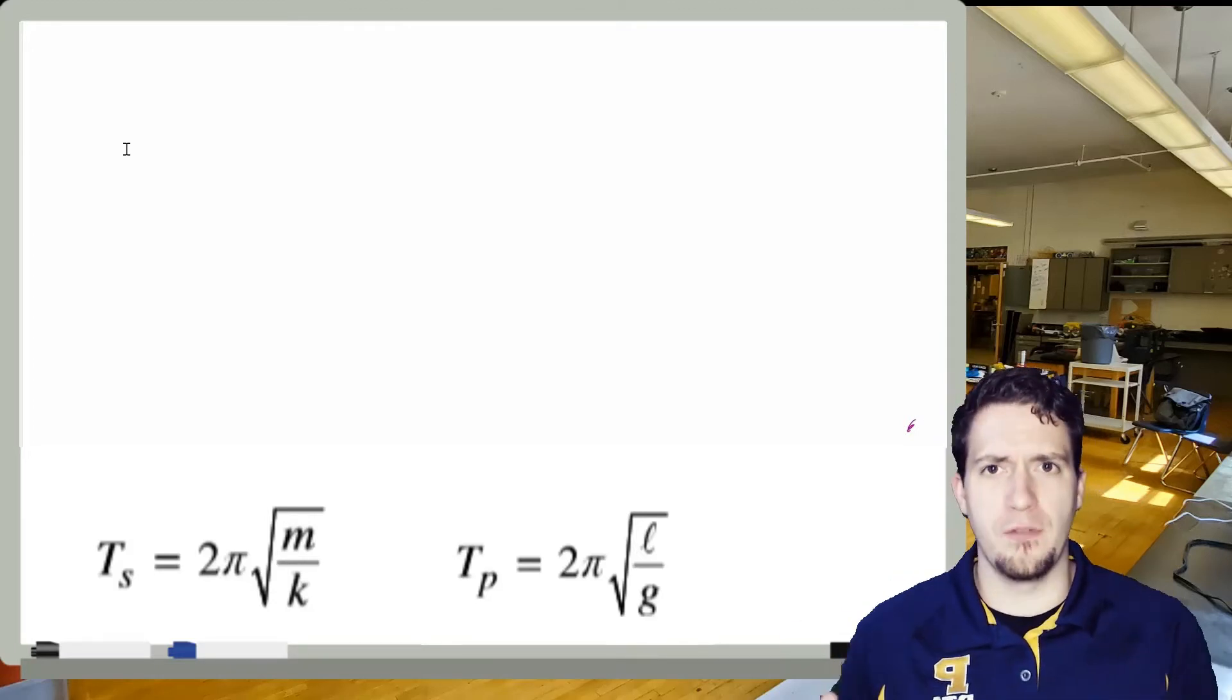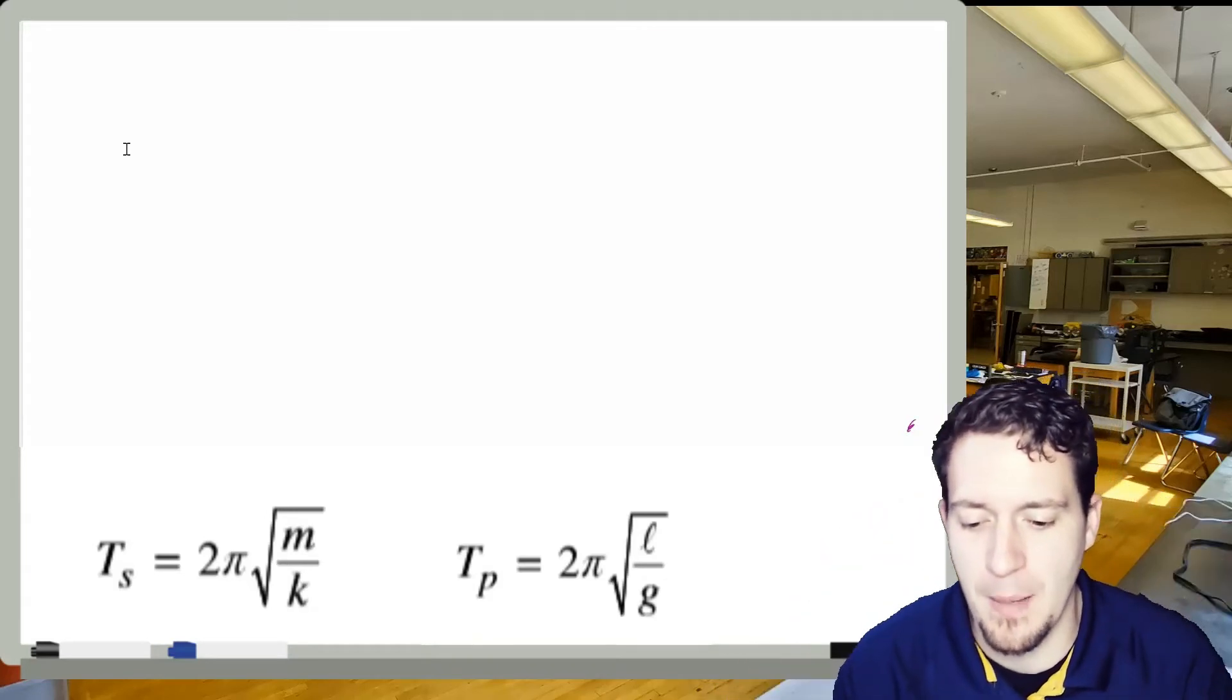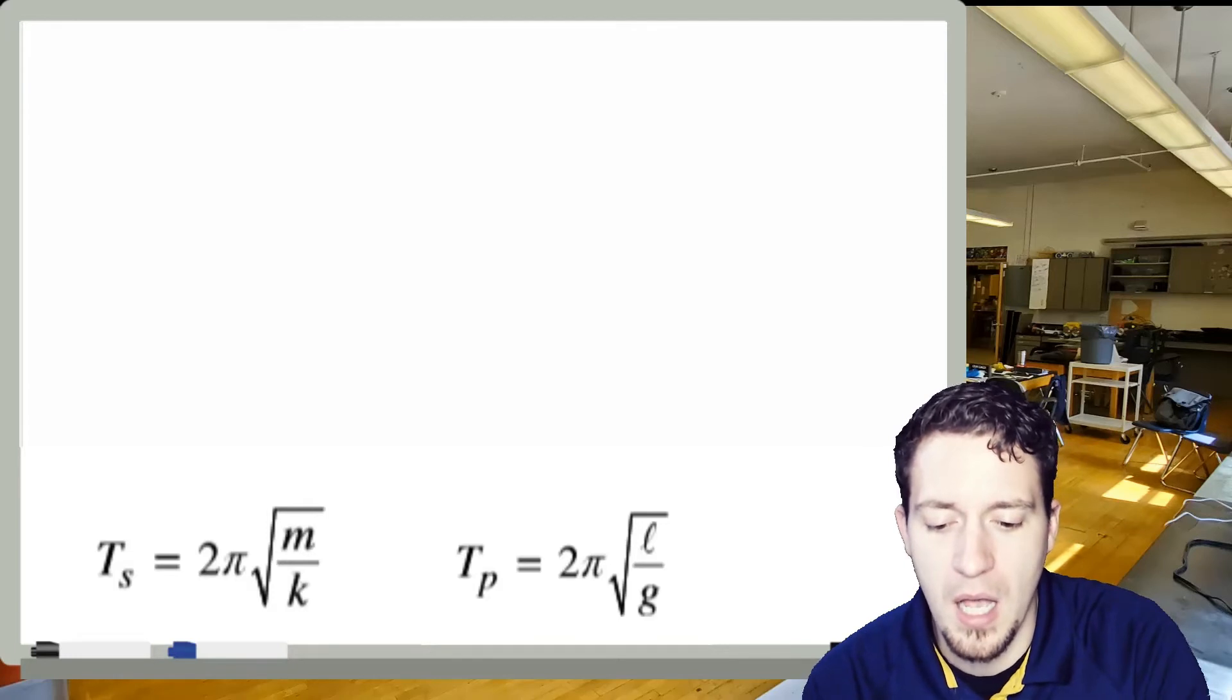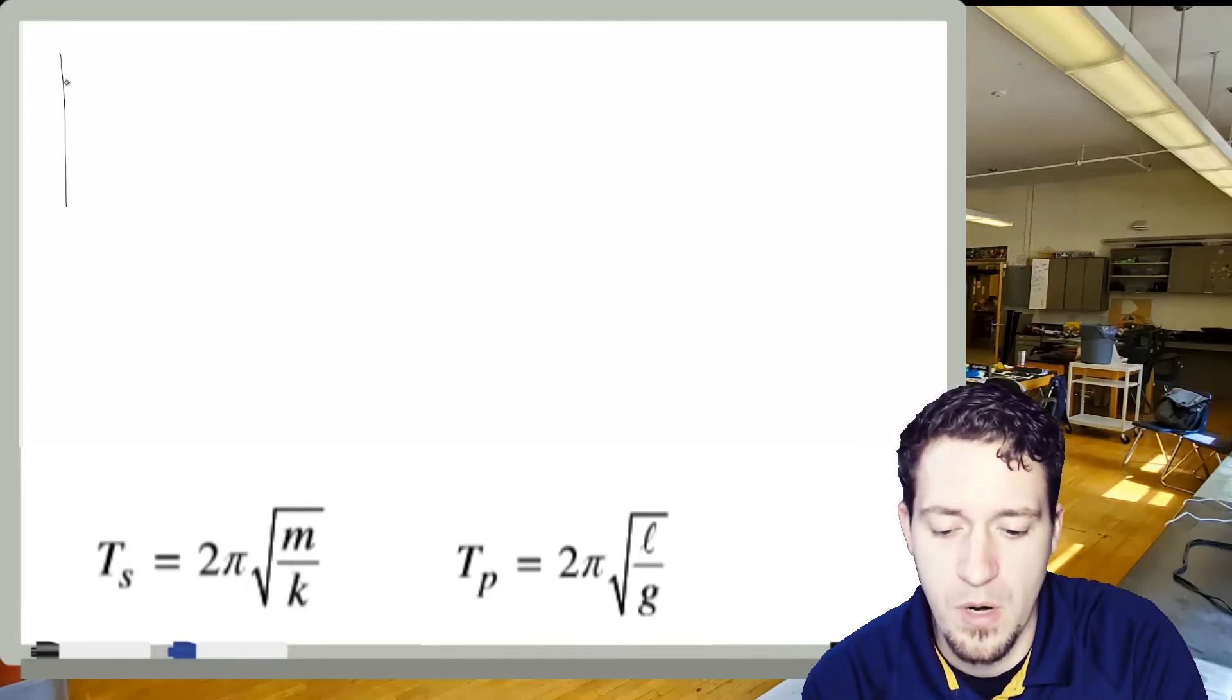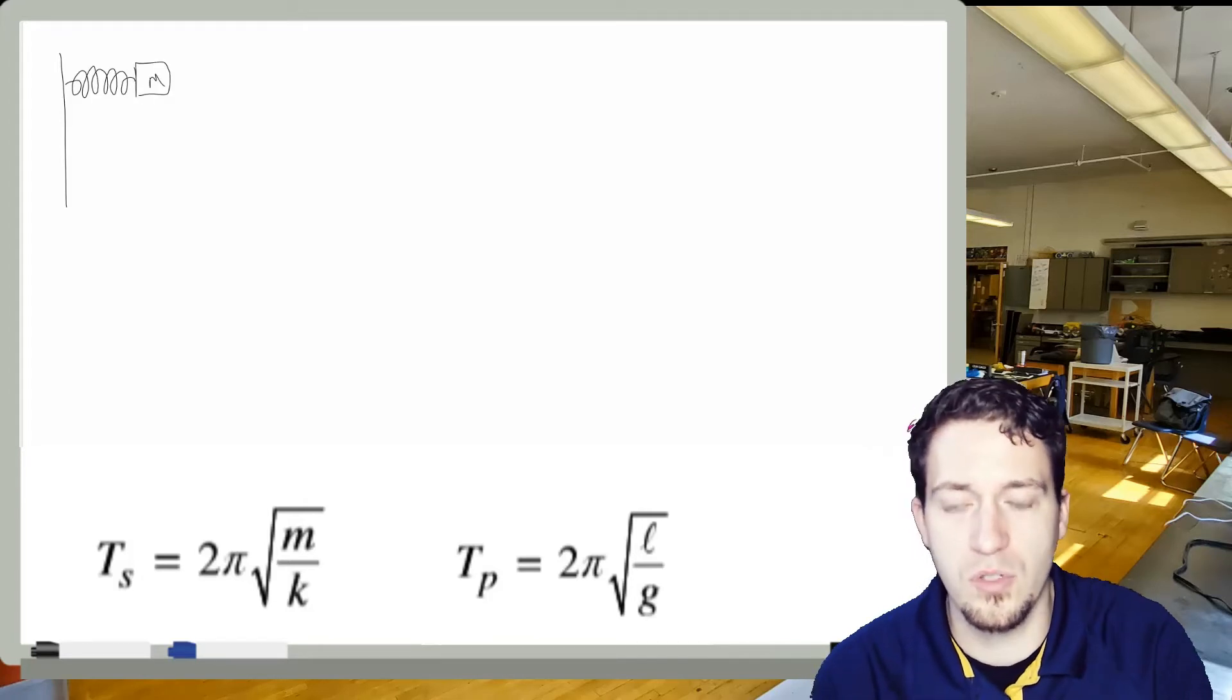Typically for us at this level, we have two main oscillators that we deal with: a spring oscillator and a pendulum oscillator. Now, they're wildly different but also very similar at the same time. So with a spring oscillator, you know, we'll have some sort of system where I will have a spring and a block on the end of that spring, and it's all squished.